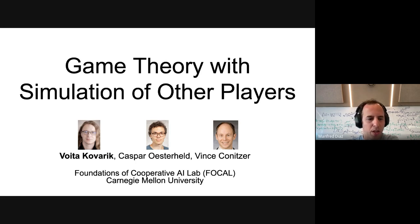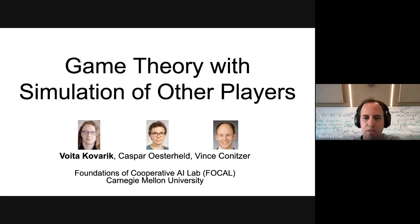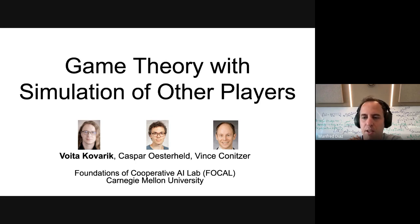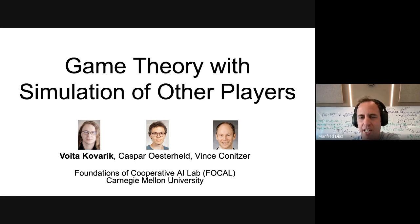Welcome everybody. Today we have the pleasure to have Vojja Kovaric. He's going to talk about game theory with simulation of other players. Vojja is a post-doctoral researcher at Carnegie Mellon University's Foundation of Cooperative AI Lab. He obtained his PhD in pure mathematics and transitioned to researching algorithmic game theory and AI. During his previous post-doctoral position at Technical University in Prague, he worked on solving two-player zero-sum imperfect information games. So without further ado, Vojja, you have your time.